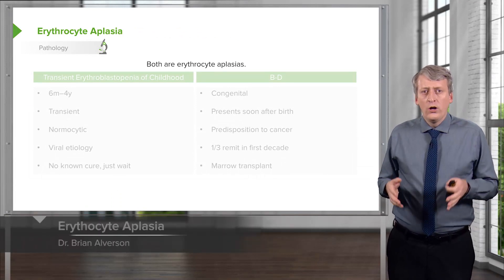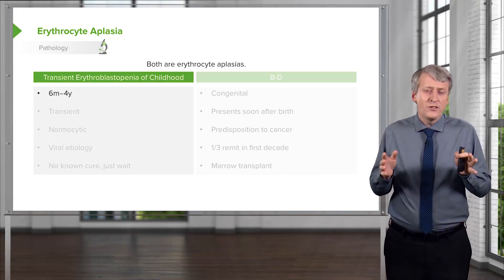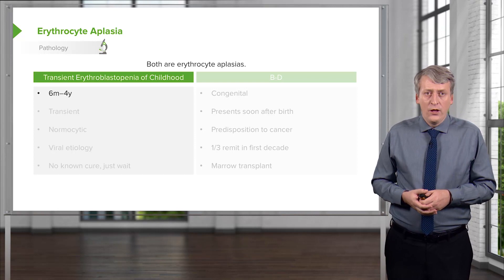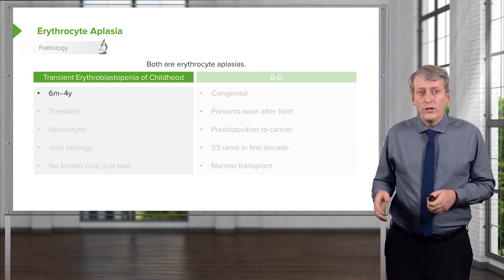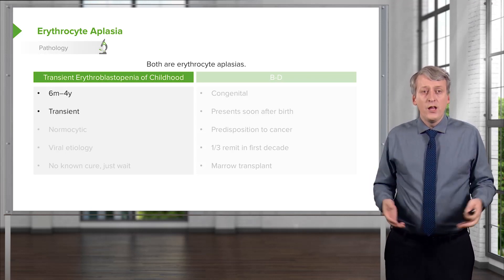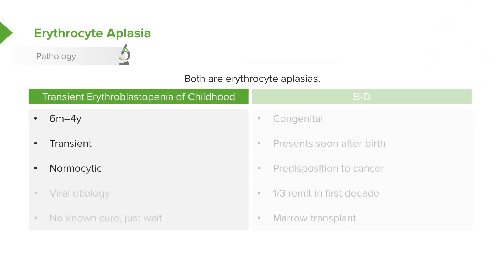Both TEC and Diamond-Blackfan anemia are erythrocyte aplasias. Transient erythroblastopenia of childhood, or TEC, shows up around six months to four years of age — I usually think of it around age one or two. This is a transient phenomenon lasting several months. It causes a normocytic anemia because these patients are transiently incapable of making red blood cells, and it is usually preceded by a viral illness, often parvovirus B19, though parvovirus is only implicated in the minority of cases.